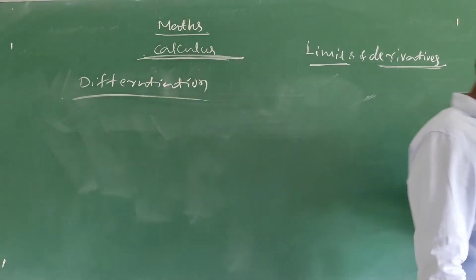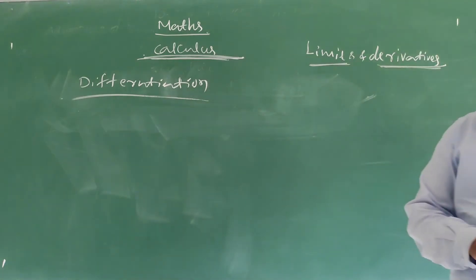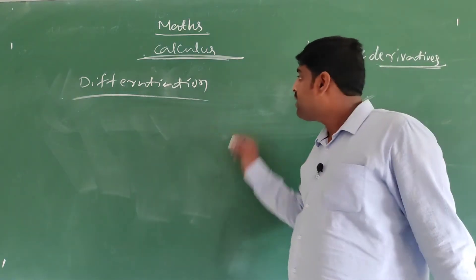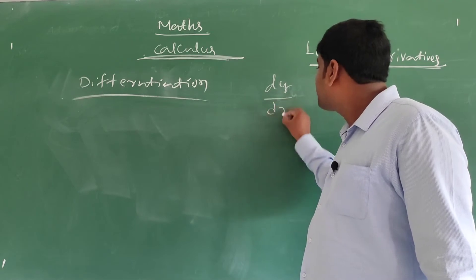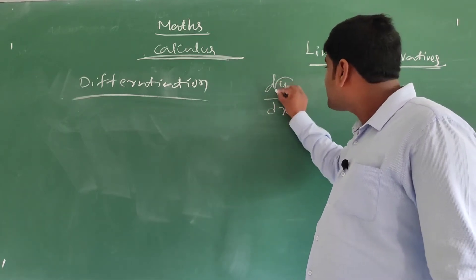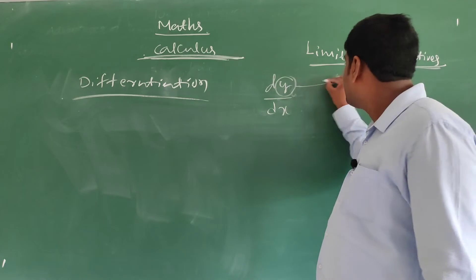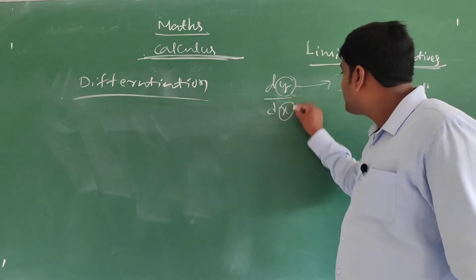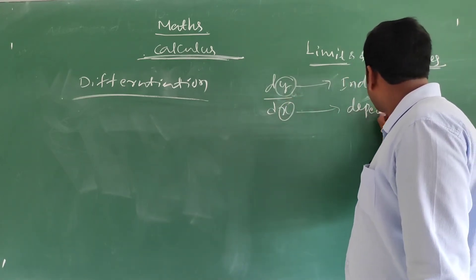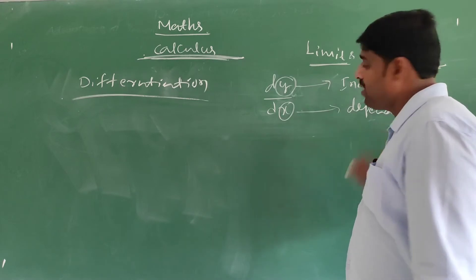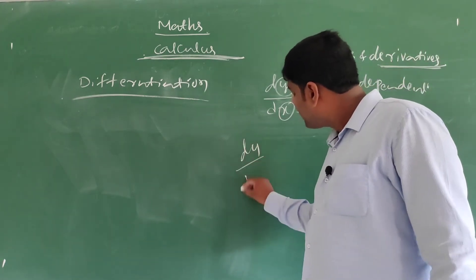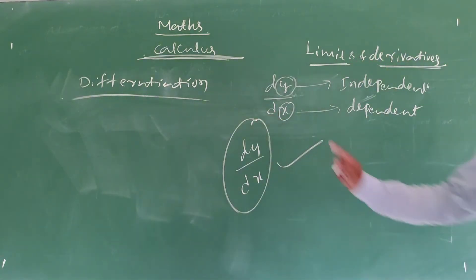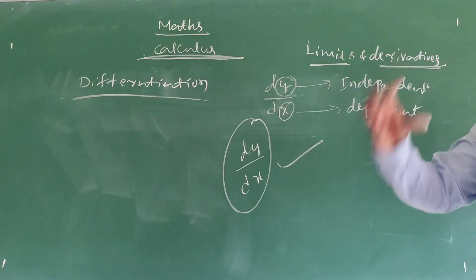For example, I take dy by dx. Here y is the independent variable and x is called the dependent variable. This dy by dx is nothing but the derivative — it is not differentiation, it is a derivative. Actually, differentiation means finding the slope of the tangent of the curve.